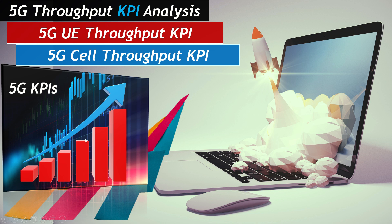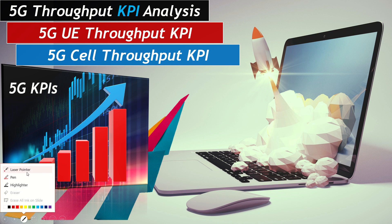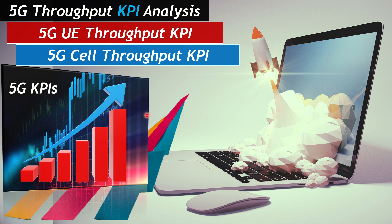Today we're going to discuss 5G throughput KPI. In the previous session we discussed 5G throughput from a drive test perspective — looking at different issues like radio and core. Today we'll understand how the 5G throughput KPI works, then look at two major KPIs: 5G cell throughput and 5G UE throughput, and understand what it means when one is higher than the other.